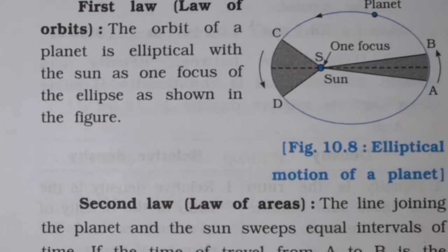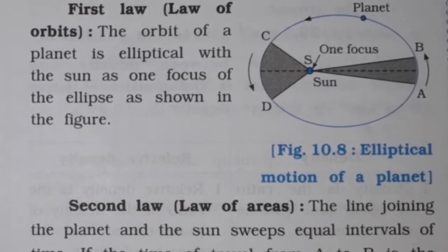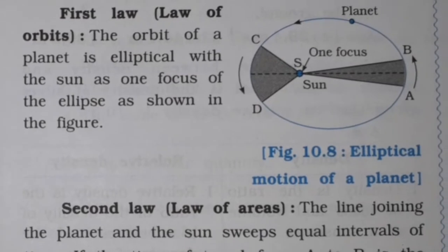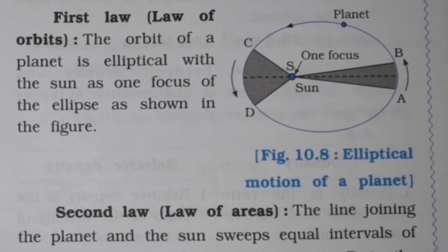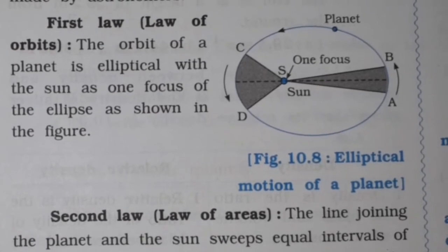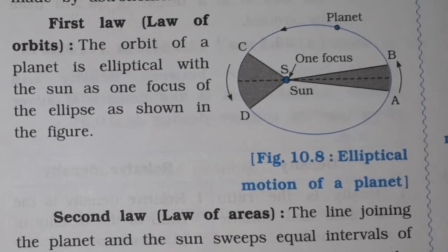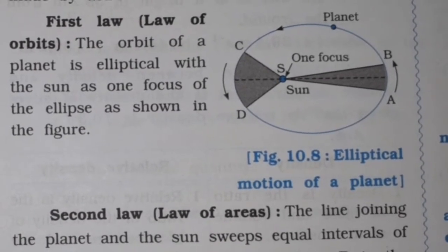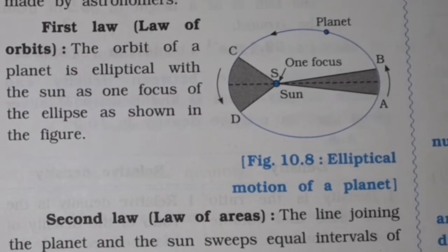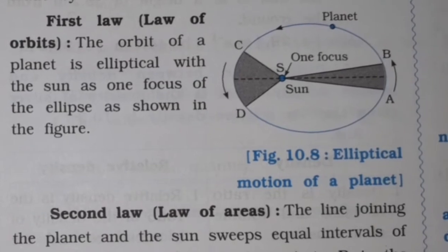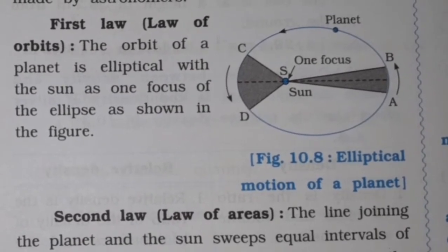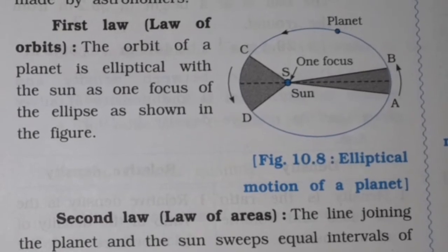Hello, I am Anupasar. Today we are going to continue our chapter number 10, Gravitational. We know that Newton gives the three laws of motion, same as Kepler gives the three laws of planetary motion. Today we are going to discuss about Kepler's three laws for the planetary motion. John Kepler formulated three laws of planetary motion on the basis of observations made by astronomers.